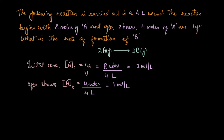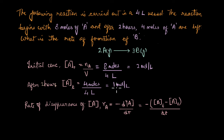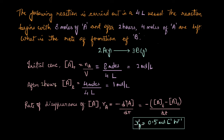The rate of disappearance of A, R_A, equals −dA/dt, which is the concentration of A after 2 hours minus the initial concentration, divided by the change in time. A_T is 1 mole per liter, A-naught is 2 moles per liter, and ΔT is 2 hours. Substituting these values, R_A equals 0.5 moles per liter per hour.